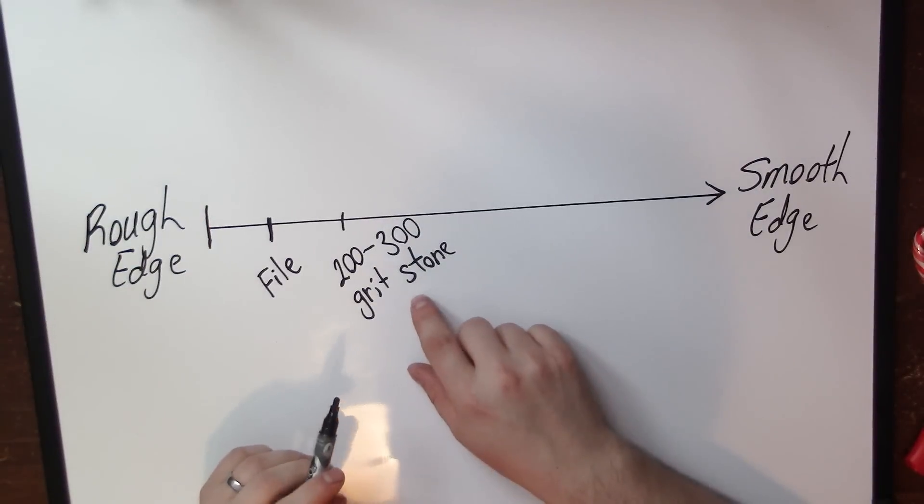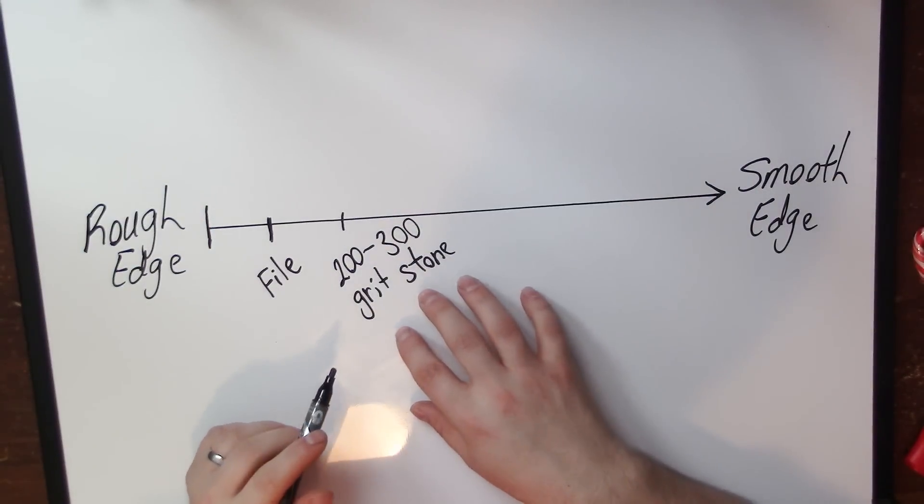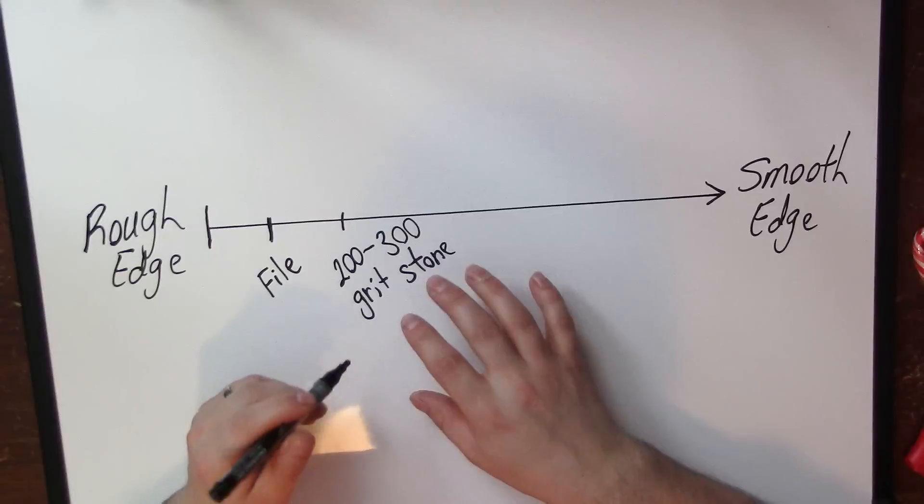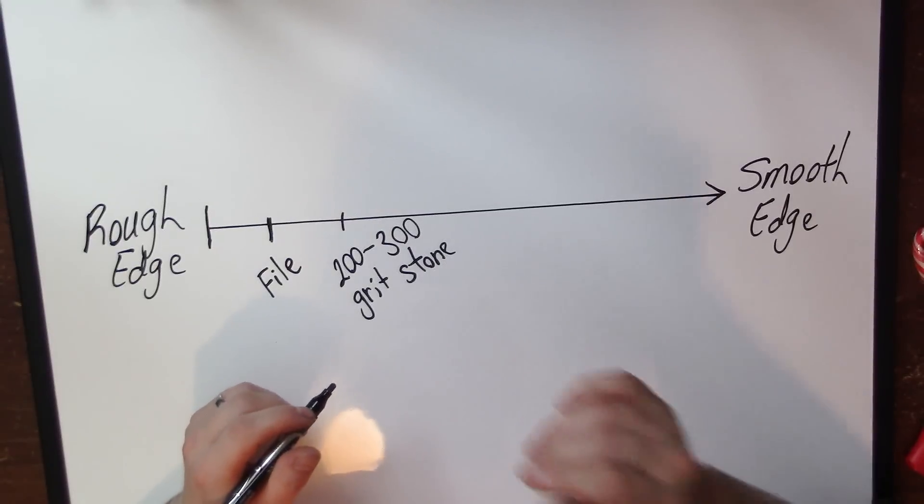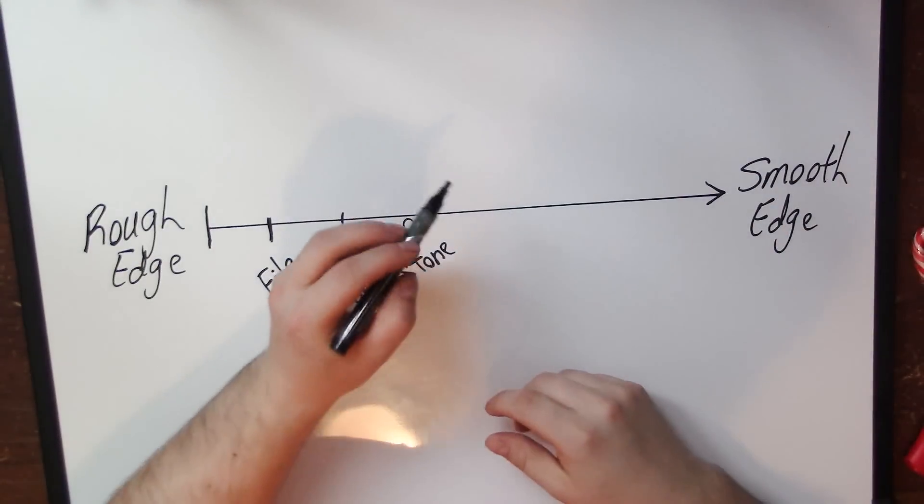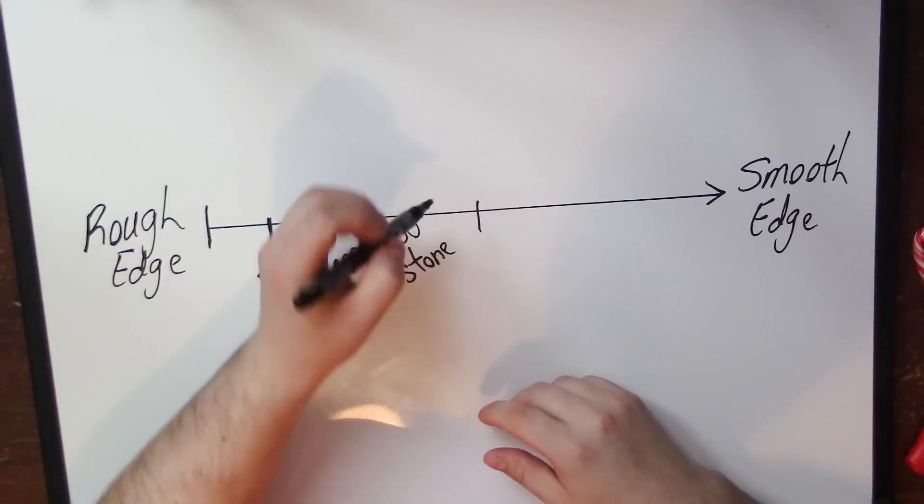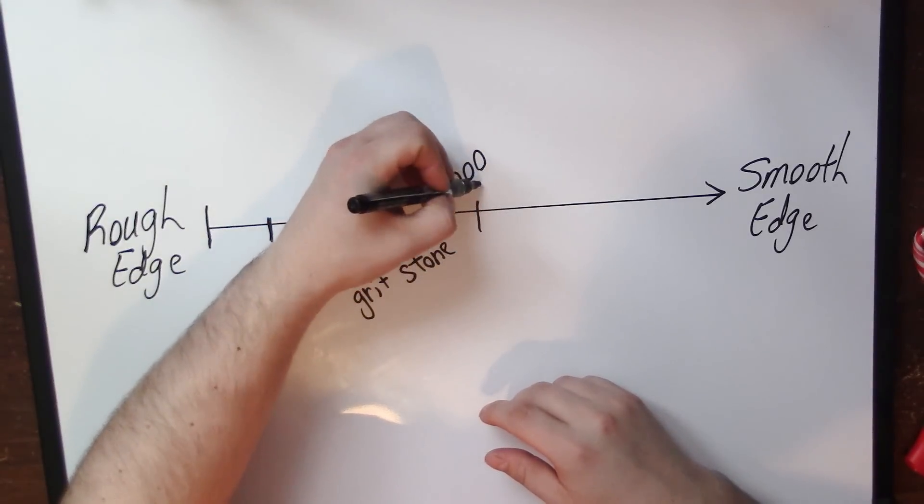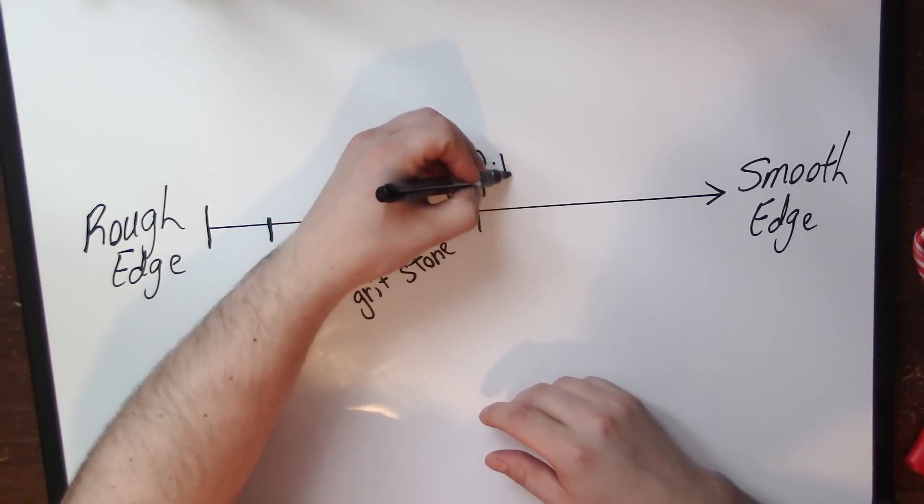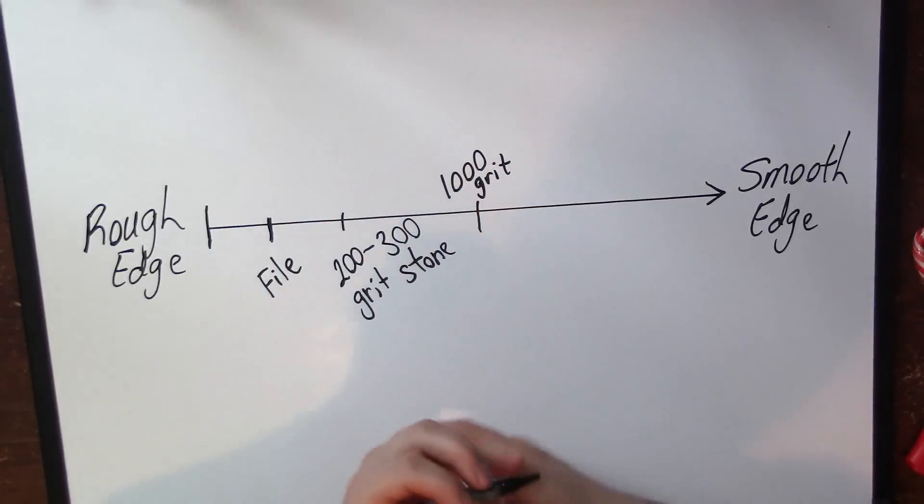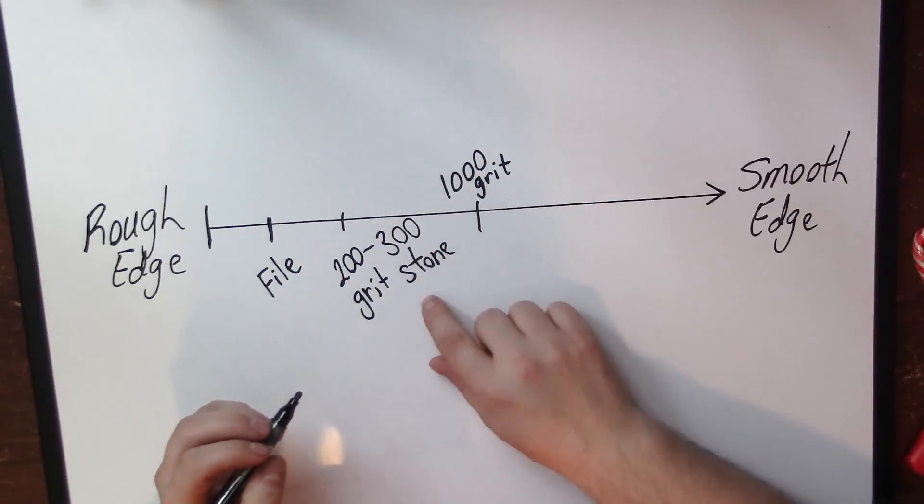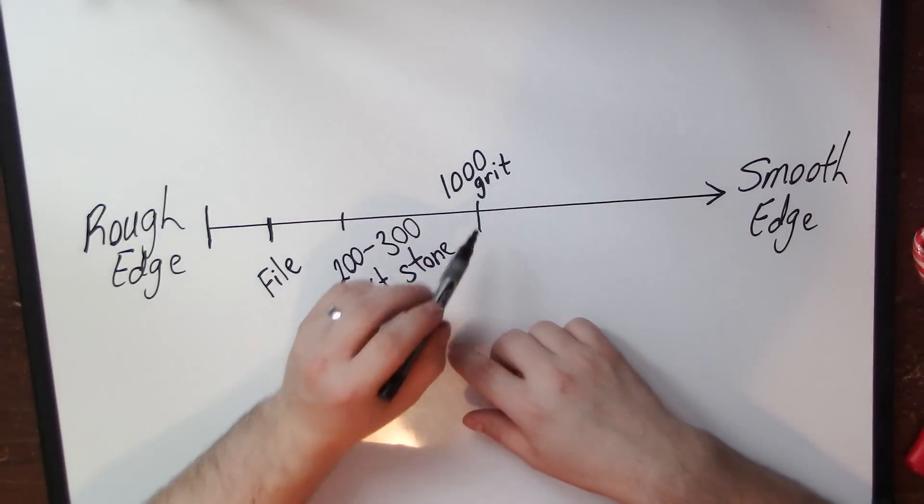From this stage, from a 200 to 300 grit stone, I think you can move into a 1000. It's feasible to get into a 1000 grit stone because a good 1000 will cut fairly quickly and it'll remove the grits from this stone pretty fast.